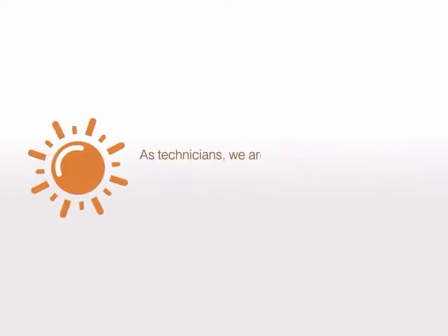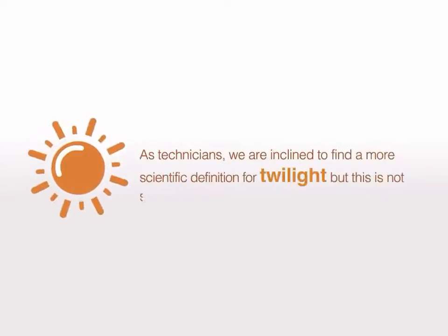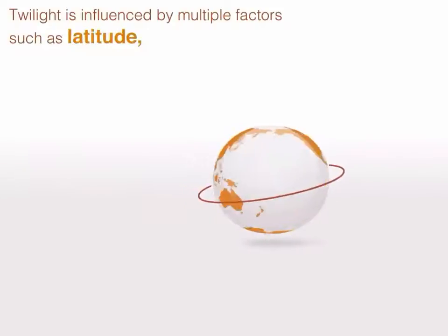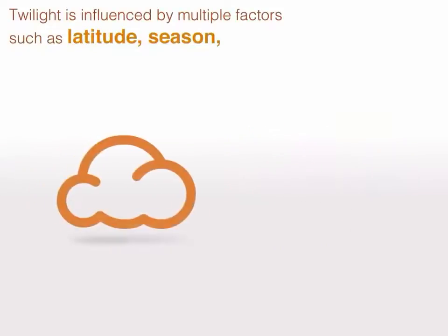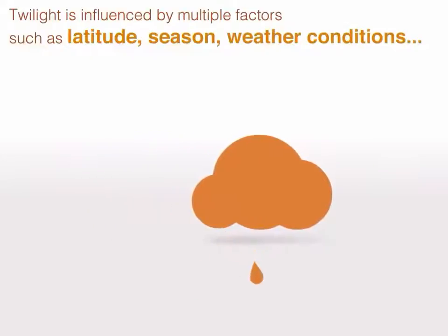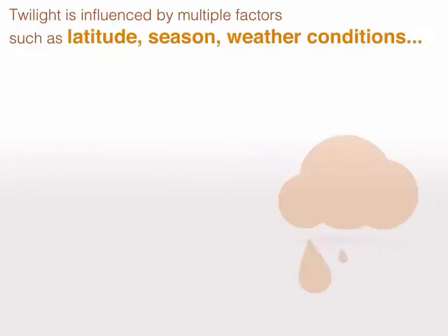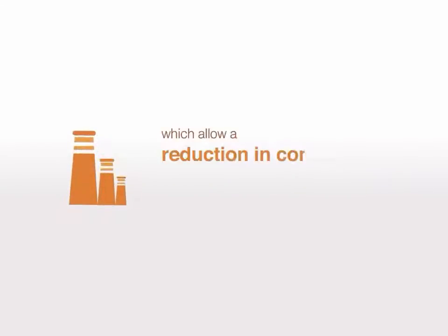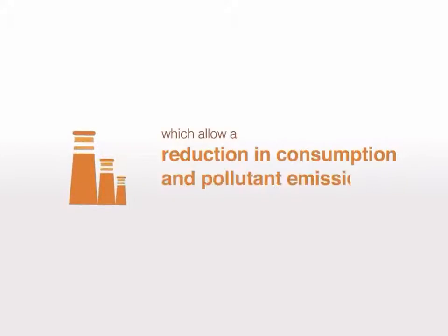As technicians, we are inclined to find a more scientific definition for twilight, but this is not simple. Twilight is influenced by multiple factors such as latitude, season, and weather conditions. The exact definition of twilight is even more important in adopting technologies which allow a reduction in consumption and pollutant emissions, while containing costs at the same time.